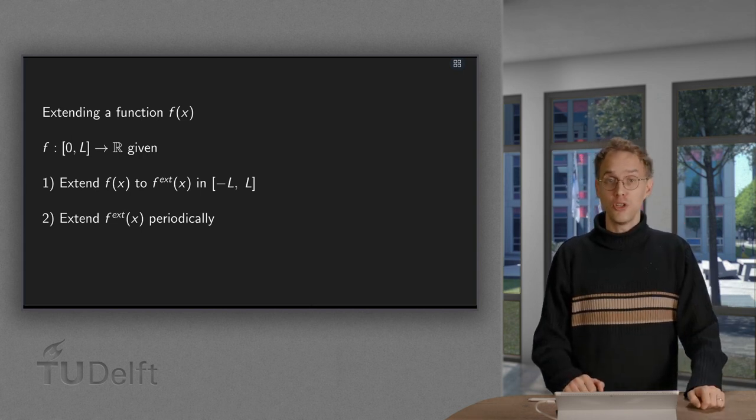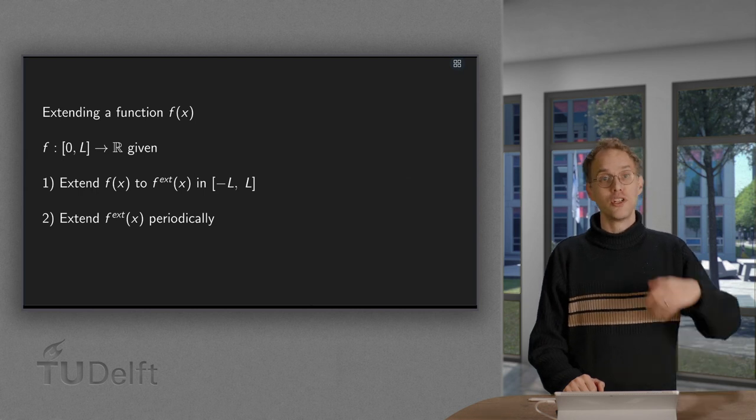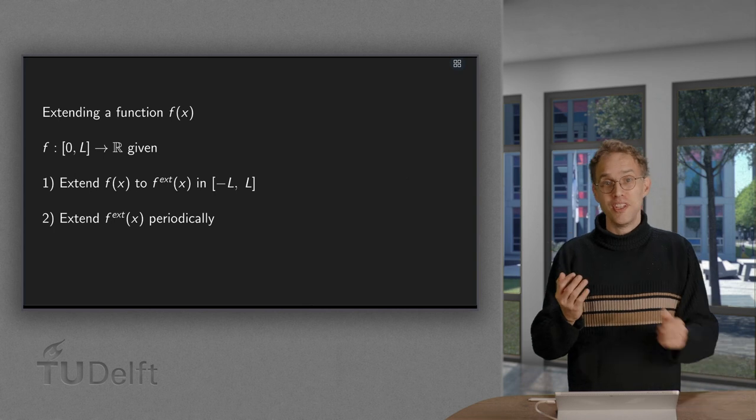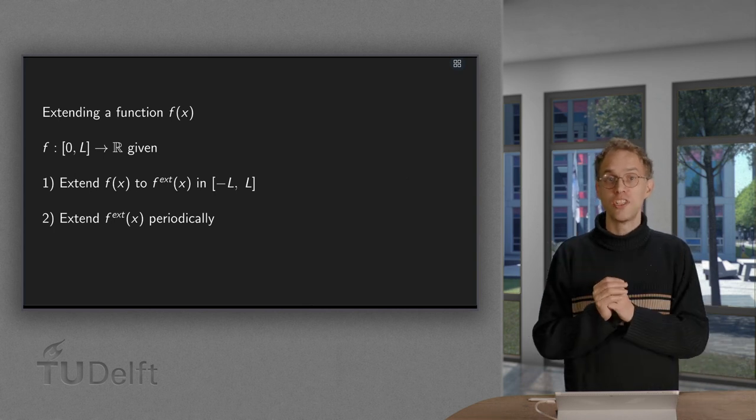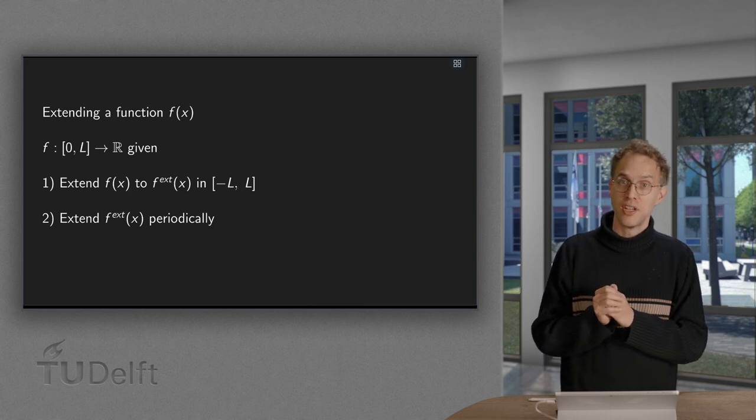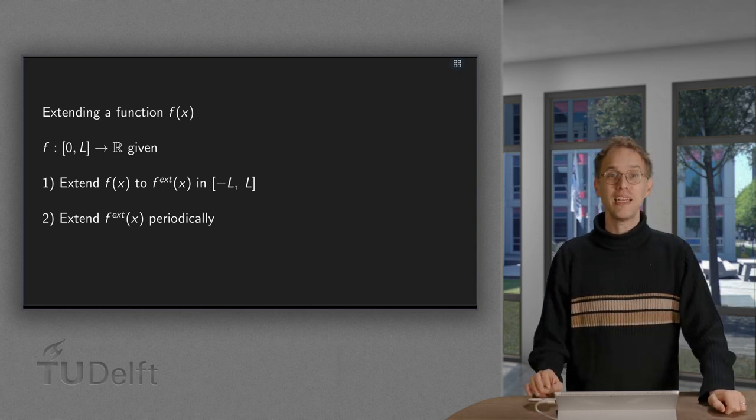This series will depend on the choice we made in the first step, so we will get different Fourier series. However, between 0 and L, all these series will converge to our original function f. So, how do we make this choice?